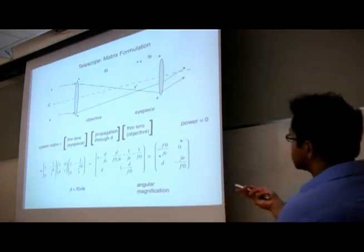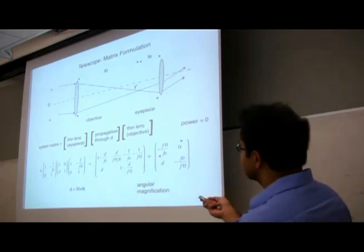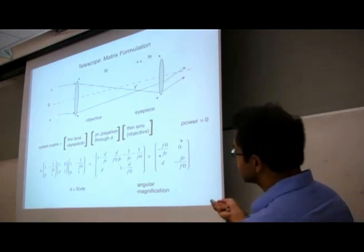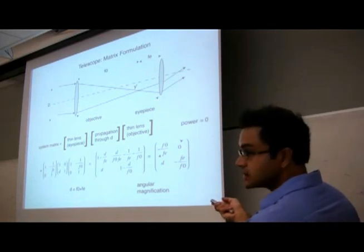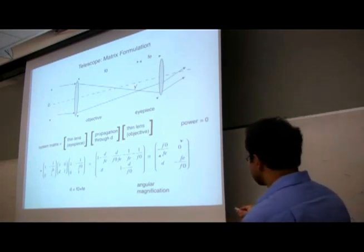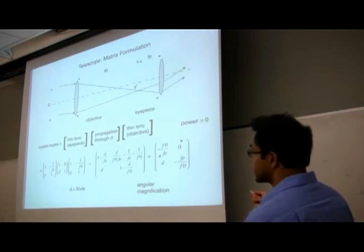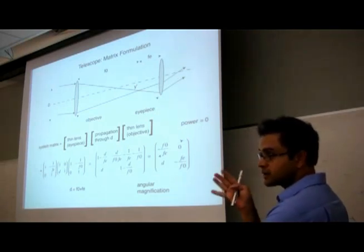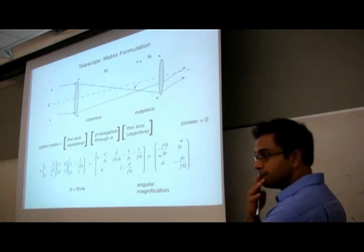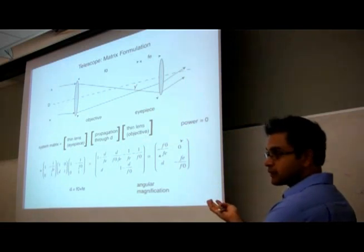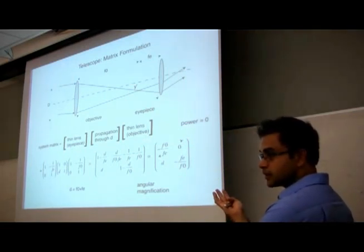To analyze a telescope with matrix optics: you have a thin lens objective, propagation through air over some distance d, and then a thin lens eyepiece. When you multiply these matrices together, you get the angular magnification. Interestingly, the power of a telescope system is zero. A telescope by itself will not form an image because its total power is zero — it can only do angular magnification.